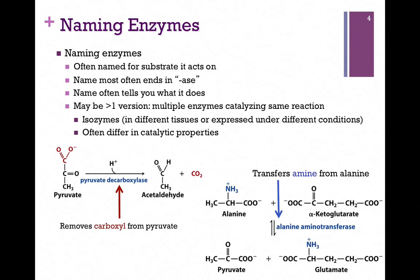Now let's look at how we name enzymes. The names often seem very complicated, but they're named for a reason — they're often named for the substrate the enzyme acts on or the product it produces. The name most often ends in '-ase,' but that's not always true. We're going to look in detail at the enzyme chymotrypsin, which clearly doesn't fall into that category, as it was named before a general naming convention amongst scientists began.